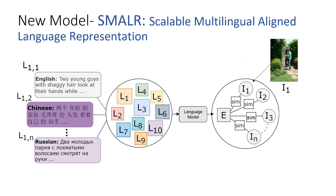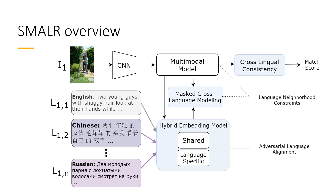Our new model is called SMALLER: Scalable Multilingual Aligned Language Representation. At a high level, SMALLER is similar to MULE in that it takes captions in different languages, maps them to a common universal space, and then maps from that space to a multimodal space where images are also projected and compared with sentence embeddings. However, SMALLER introduces several new ideas that help reduce the total number of parameters. Due to time constraints, I will focus on two of these.